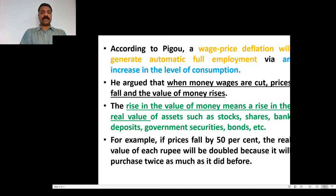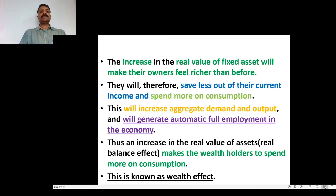A 50% decrease in prices means the value of money is higher. The value of assets — stock shares, bank deposits, government securities, bonds — is increased. When there is an increase in the real value of fixed assets, it will make their owners feel richer than before. This belief leads to an increase in consumption expenditure; they start to save less out of their current income and spend more on consumption.